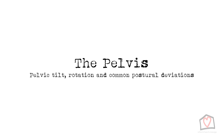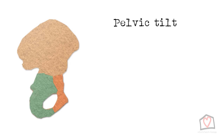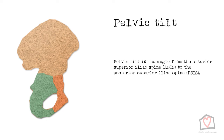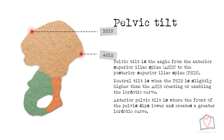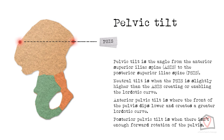The last area we're going to cover here is the pelvis. We're going to have a quick look at the pelvic tilt and rotation before we move on to common postural deviations. When we talk about the pelvic tilt, we are talking about the angle from the front to the back, or the angle from the anterior superior iliac spine (ASIS) to the posterior superior iliac spine (PSIS). The pelvic tilt can be neutral, which is when the PSIS is slightly higher than the ASIS, creating or enabling the slight lordotic curve of the lumbar spine. Women are slightly more forward tilted than men. You can have an anterior pelvic tilt, which is quite common, where the front of the pelvis dips lower and creates a greater lordotic curve — this is the forward rotation of the pelvis, which will allow hyperlordosis. You can also have a posterior pelvic tilt, where there isn't enough forward rotation of the pelvis, which in turn creates or enables a hyperlordotic lumbar curvature.